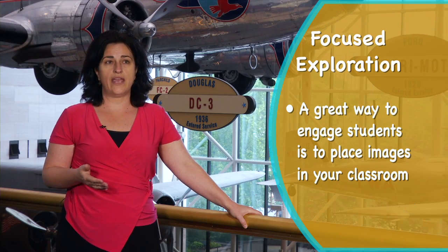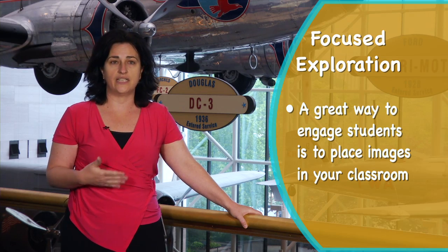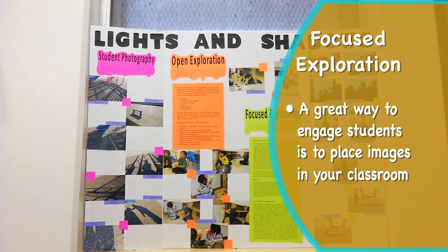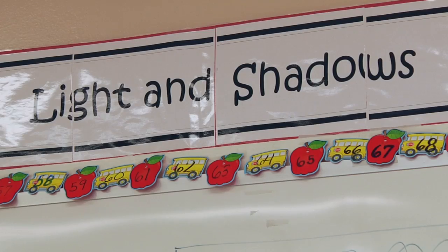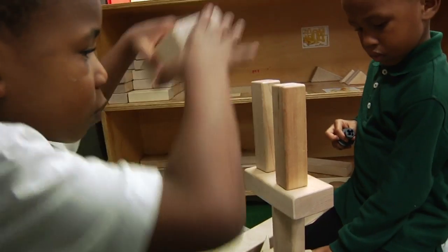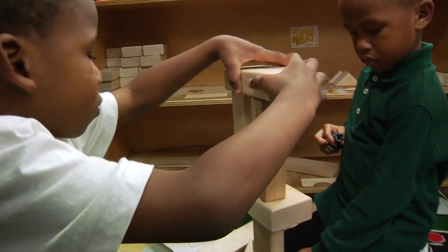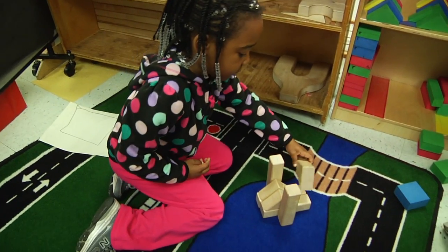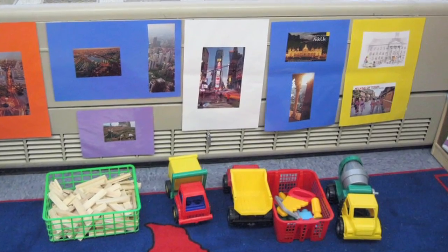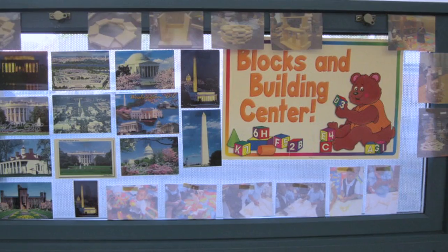A great way to really engage students in the classroom is to put some compelling images around the area where the students are going to be using the materials. You can put images of buildings in the block area and that can inspire the students to build tall towers or long buildings. In the blocks area, for example, I have pictures of different DC monuments and buildings that they can build themselves or attempt to build with the block material.